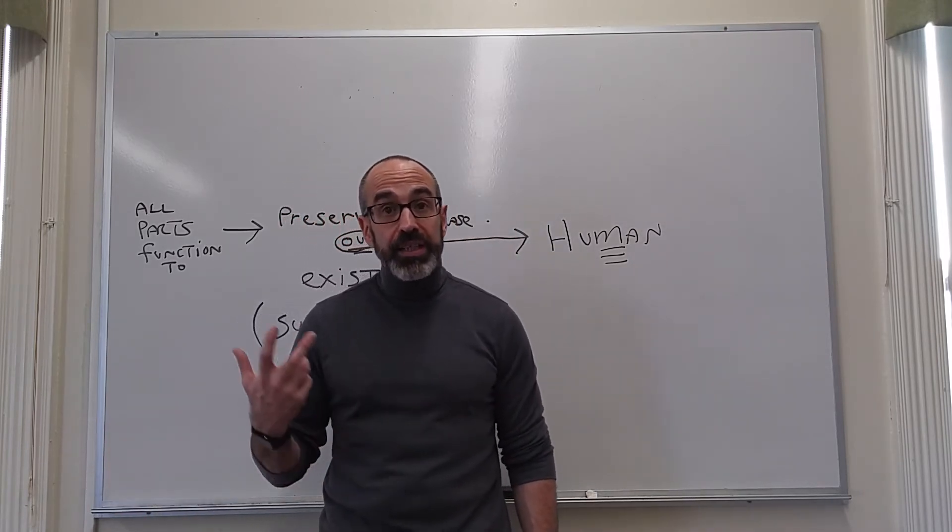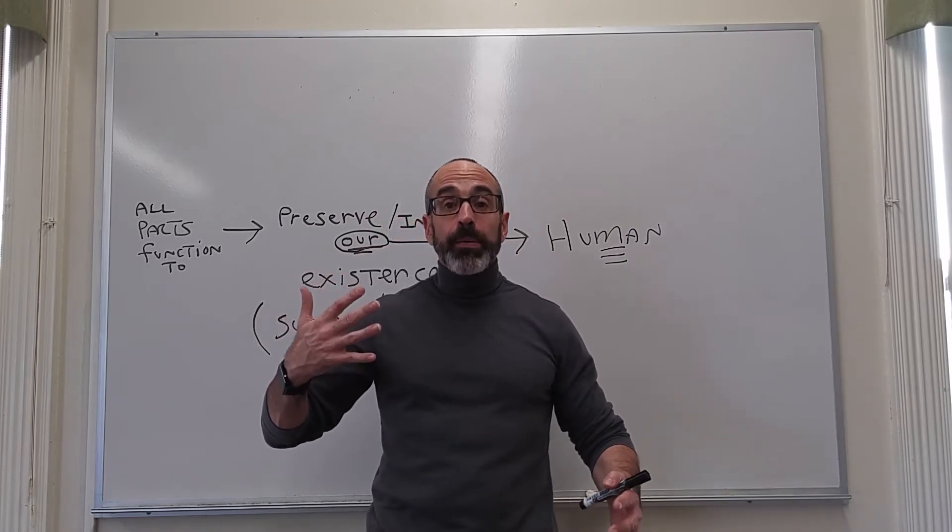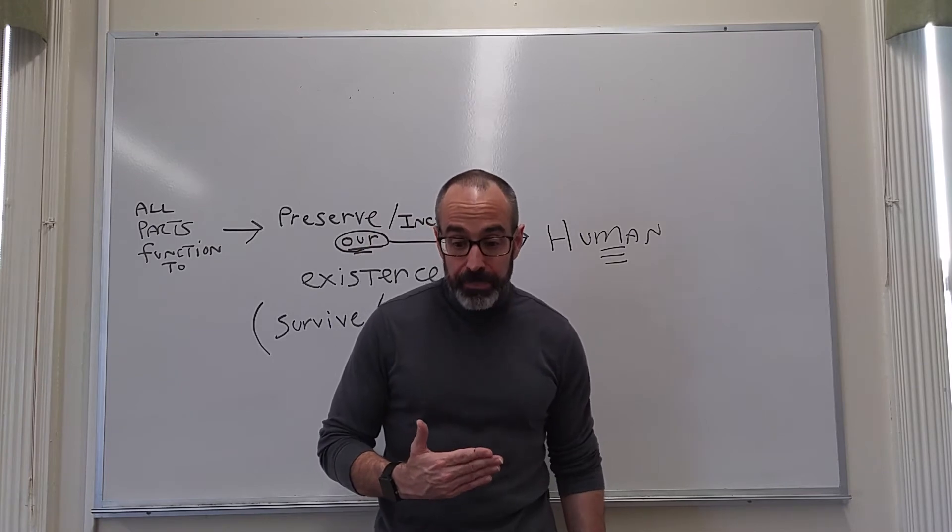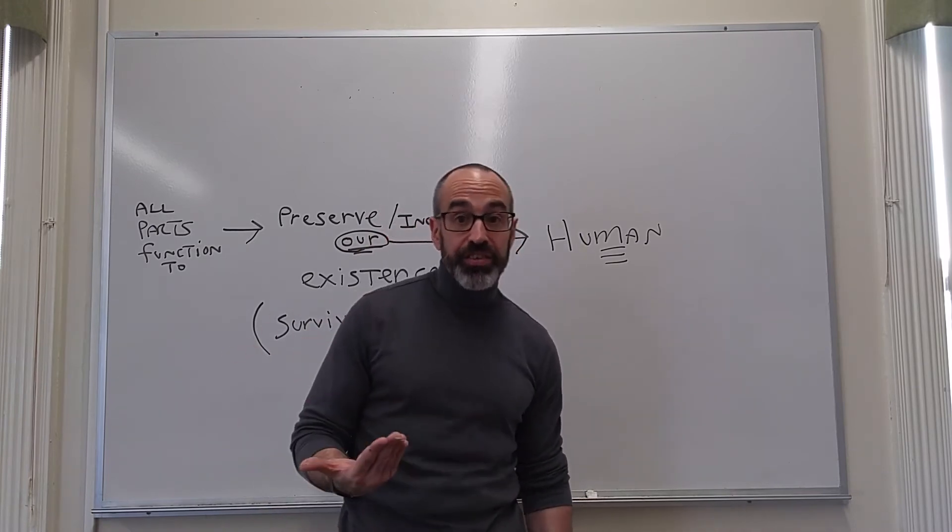Animals are animated things. They are things that move themselves. And so, therefore, humans, unlike plants, are animals. And therefore, not only live, but move themselves and have desires and consciousness.